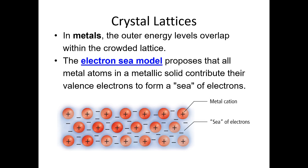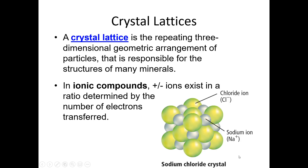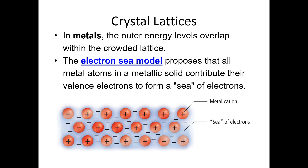In metals, the outer energy levels of electrons overlap. Instead of forming an ionic compound where electrons are transferred and held as part of the ion — with cations and anions locking into place — in metals we just have a bunch of cations, all positively charged. The extra valence electrons get pulled together in what we call the electron sea model. The electrons sit in the spaces between the cations and are not locked into place like they would be in ionic crystals. In sodium chloride, for example, there are no loose electrons — all electrons are tied up as part of the chloride ions.